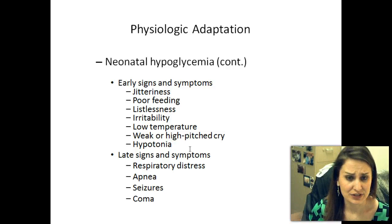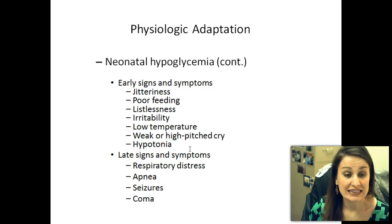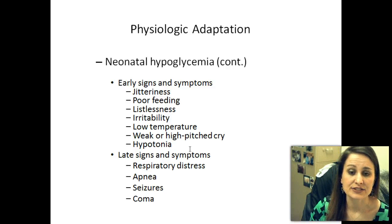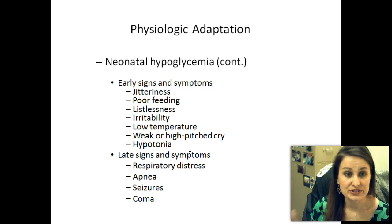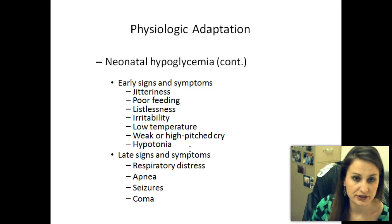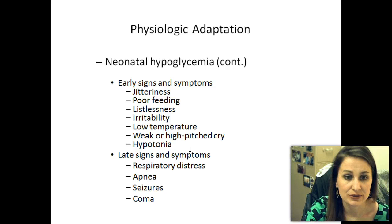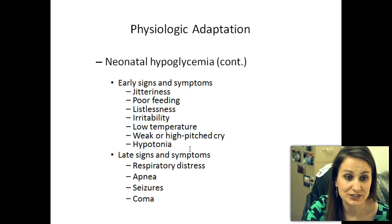They'll have a low temperature, a weak or high-pitched cry, and they won't have good tone. They won't have that flex position that we want to see. Late signs — really late signs — are going to be respiratory distress, apnea, seizures, or coma. That's why this is so important. If a baby can go into a coma because of a low blood sugar, that can cause long-term brain damage. This is why we have to catch it early. If a baby is showing any of these signs, we need to get the glucose on them quickly and see what the blood sugar is doing.